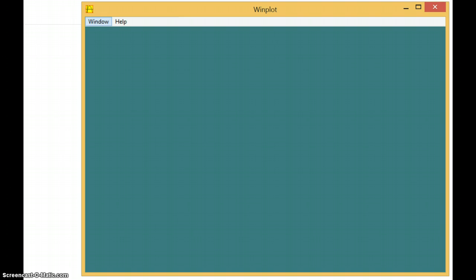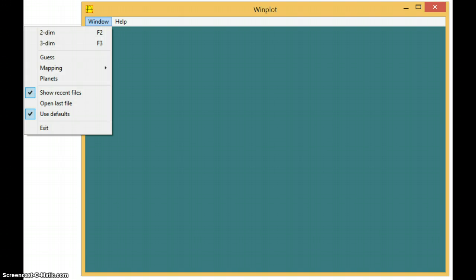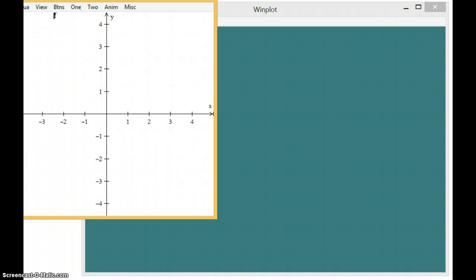So the first thing you do is window. It's a two-dimensional graph. This comes up over here.